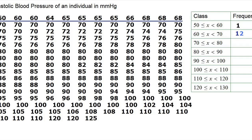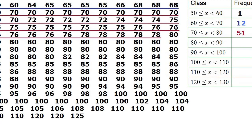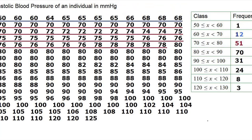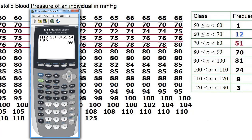From 60 to 69 we have 12 observations, so we recorded a frequency of 12. From 70 to 79, if we count them together, there are 51. After finishing this counting, we have to make sure they add up to 200. Add all these numbers up and they do add up to 200.